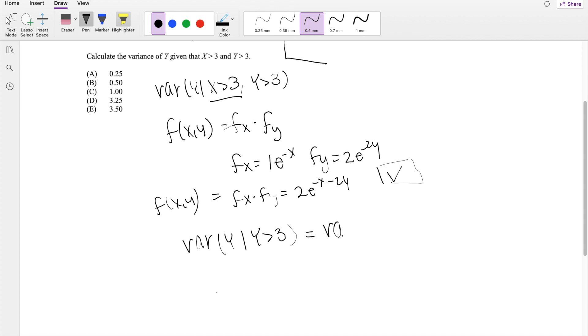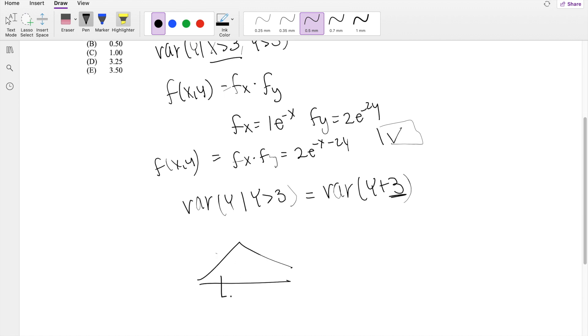So this is actually equal to the variance of y plus 3. We still have to take into the 3 here. But the thing is, when you calculate variance, you're actually looking at the range, right? Like the disparity in data. So it doesn't really matter whether it starts here or whether it starts here. Adding and subtracting by a constant does not make a difference. So this is essentially equal to the variance of y.